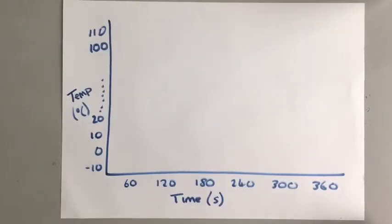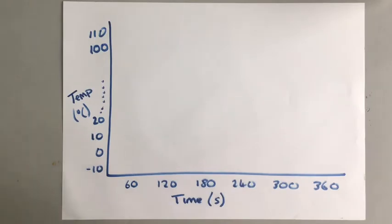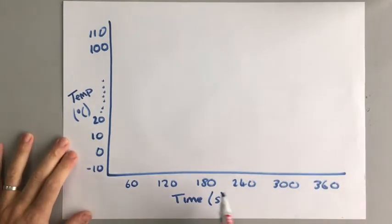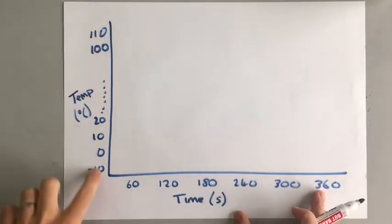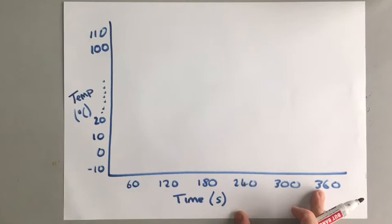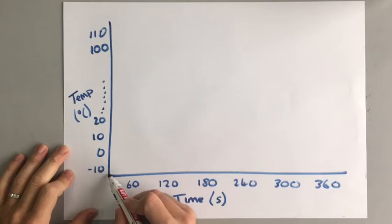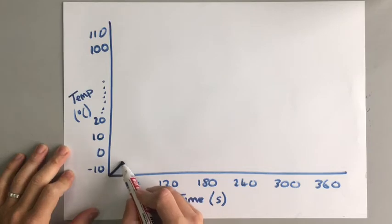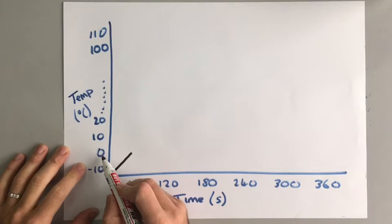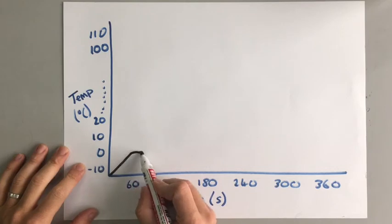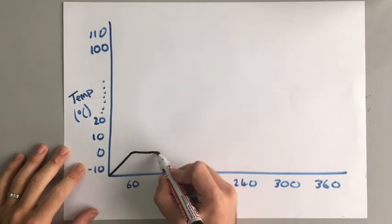Latent heat means 'hidden heat' — and why would it be called that? If you plot a graph of heating up a substance, in this case some ice starting at minus 10 degrees C, as we start adding energy the temperature will increase until we get to zero degrees C. At zero degrees C, ice is going to melt, and what happens to the graph is it flattens out for a while while the ice is melting. Once all the ice is melted, the temperature starts to increase again.